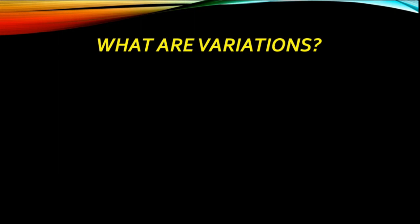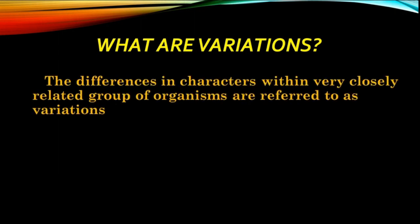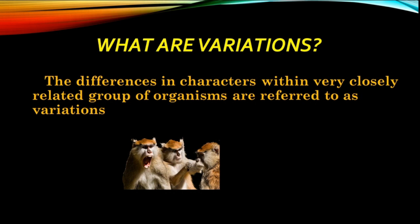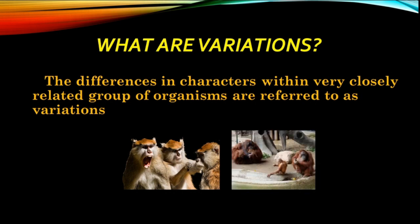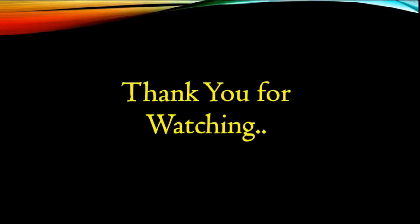From the above examples, we can conclude that the differences in characters within a very closely related group of organisms are referred to as variations. I hope you understood the definition. In the coming days I will cover more basic definitions such as homologous organs, analogous organs, homozygous condition, and heterozygous condition, so don't miss the upcoming videos. Thank you very much for watching.